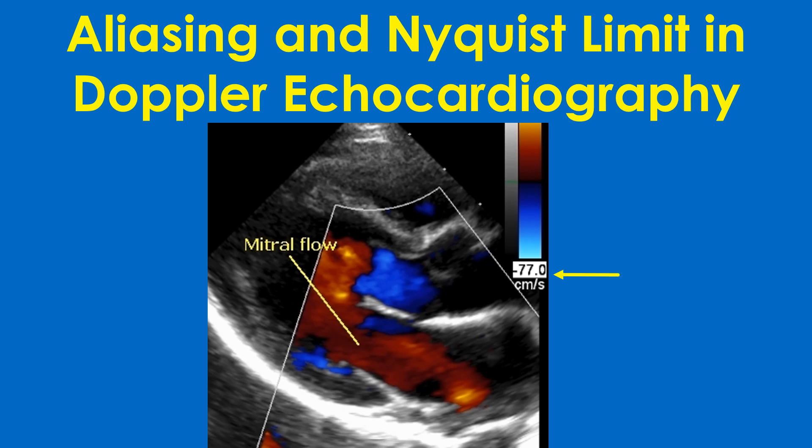Here the flow away from the transducer in blue color has a Nyquist limit of –77 cm per second. The Nyquist limit for flow towards the transducer is not seen in this image as it has been cropped. When the Nyquist limit is exceeded twice, the color shifts back to the original color — this is known as the second wraparound.